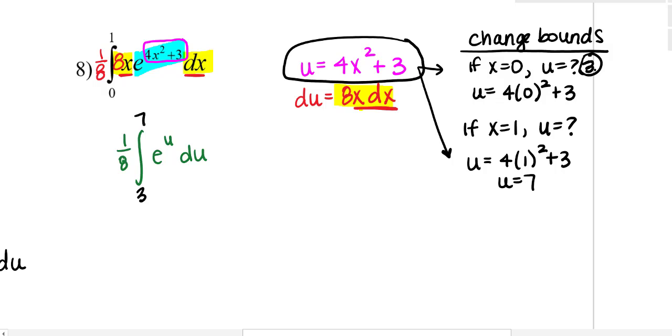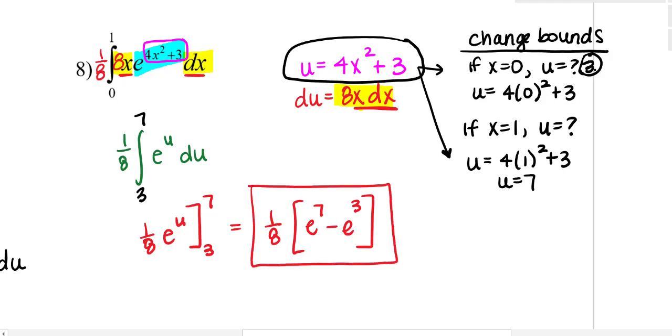So my upper bound is 7, and I can go ahead and anti-differentiate. E to the u du is just e to the u, and I will go from u equals 3 to u equals 7. So that will become 1 eighth times e to the 7th minus e cubed. That is irrational, and you are done. I could maybe factor out an e cubed, but I'm not going to be able to combine those together, so I leave it.